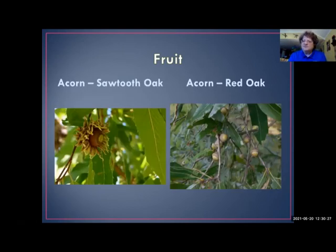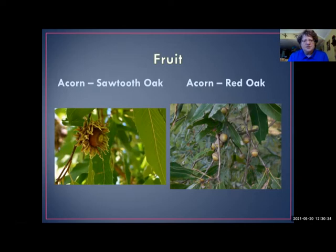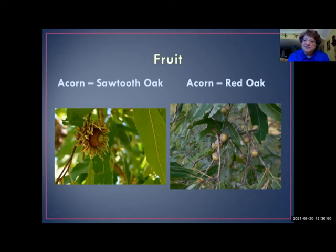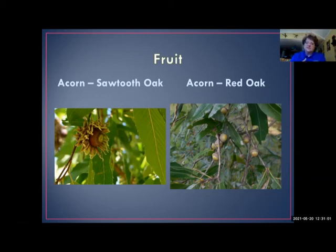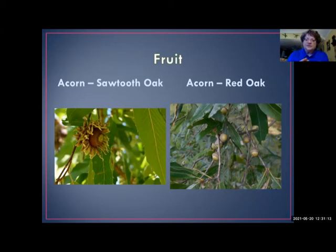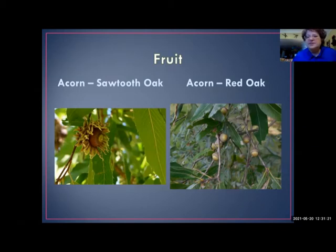Acorns are very distinct for certain oak trees. The sawtooth oak has a very distinctive cap on the acorn — you can't miss it; it's the only one really like that in the woods. Red oak has good acorns, and one thing to note: acorns on red oaks form on the previous year's growth, so they're going to be further in on the stem rather than close to the branch ends.